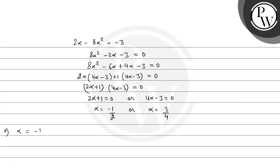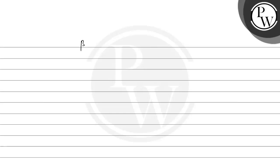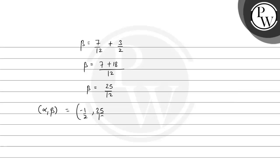When α equals minus 1/2, the value of β is: β equals 7/12 minus 3 multiplied by (minus 1/2), which equals 7/12 plus 3/2. Computing this, β equals 7/12 plus 18/12, giving β equals 25 divided by 12. So the first order pair is α equals minus 1/2 and β equals 25/12.